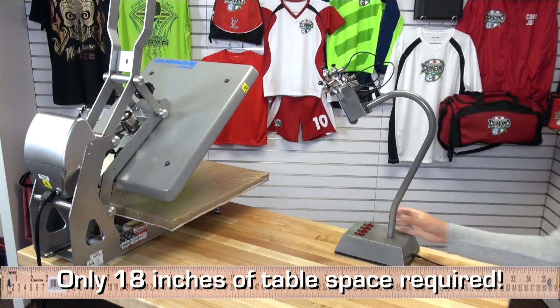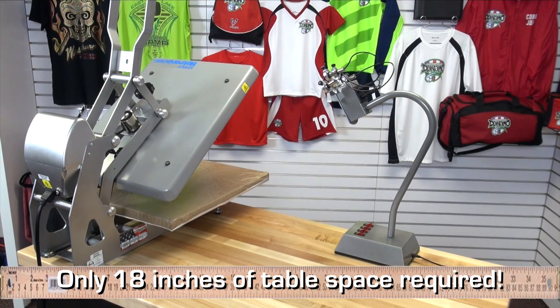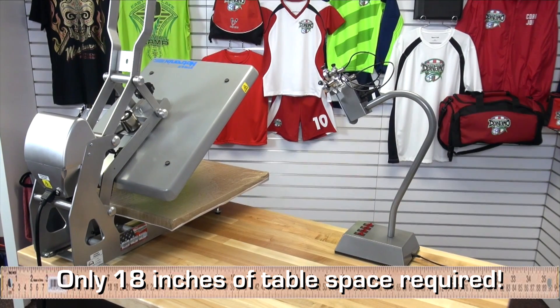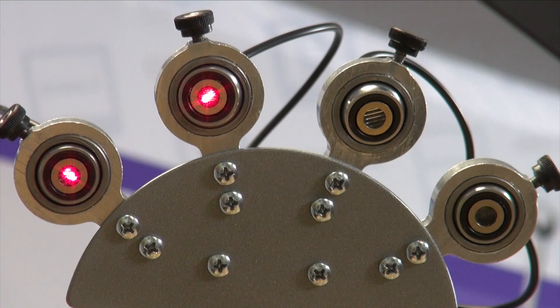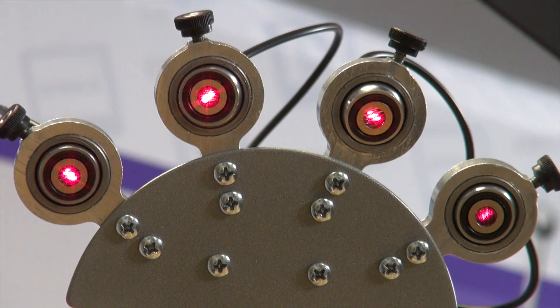The heat press laser alignment system only requires 18 inches of table space and weighs approximately 10 pounds. Each laser can be turned on or off independently by the switches on the bottom of the base.